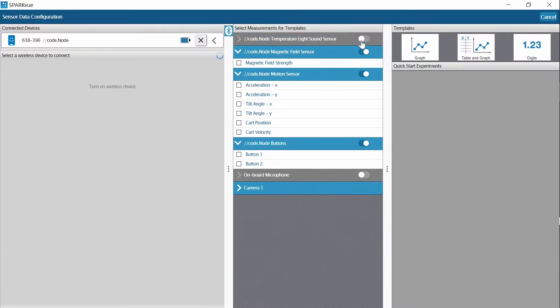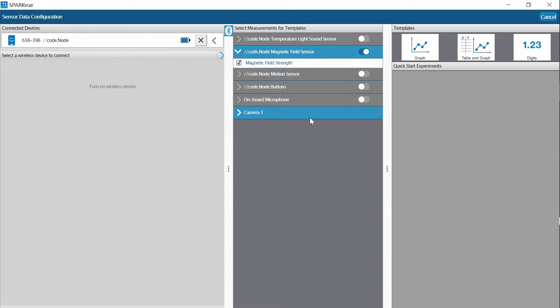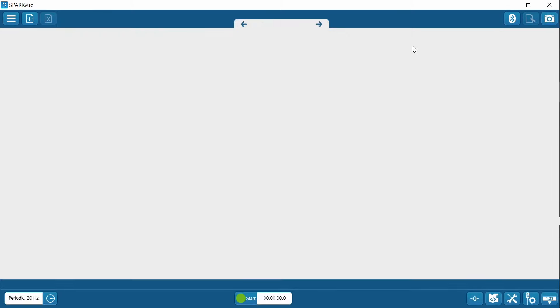All right, so let's get to coding. I want you to see how the magnetic field sensor works with these rotations. So the first thing I want you to do, we're going to disengage the temperature, light, and sound sensor. We won't need that for this. I'm just going to check the magnetic field strength sensor and disable the others and pull up a line graph.